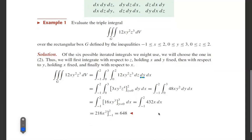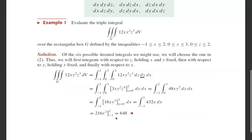Integrating 432x with respect to x gives 216x². Evaluating from x = −1 to x = 2: 216(4) − 216(1) = 864 − 216 = 648. So the solution is 648.